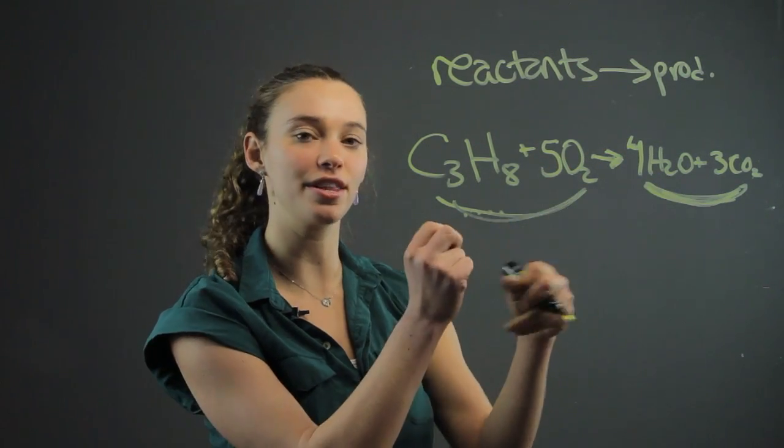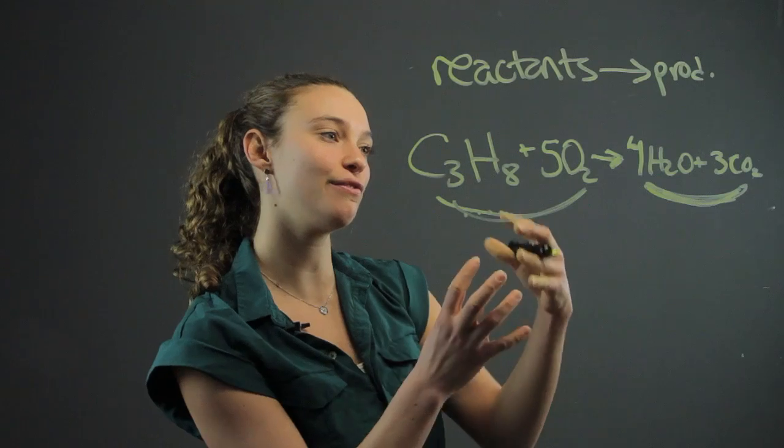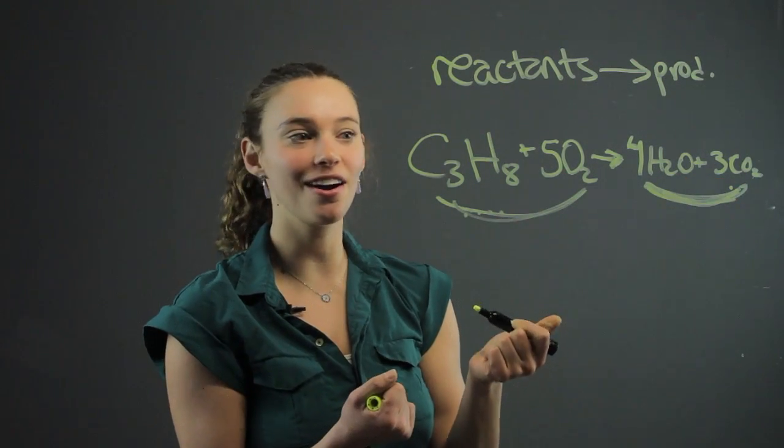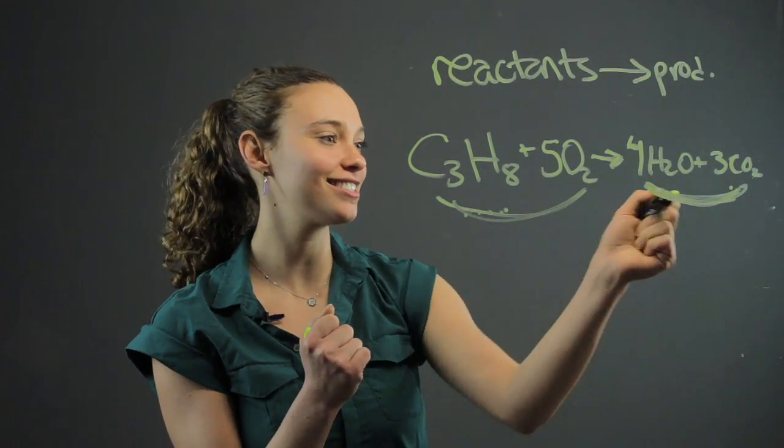This arrow shows that there's a chemical equation going on, they're forming these products. And that's how you know, in this equation, these are the reactants, these are the products.